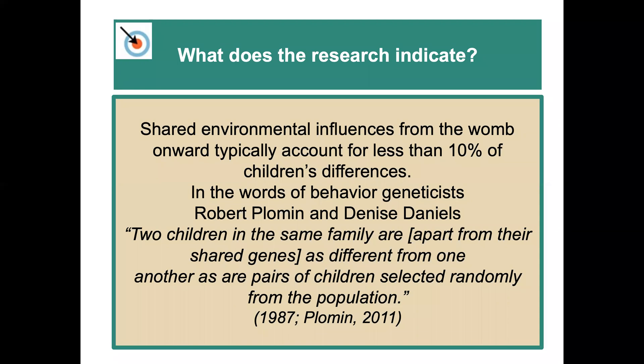Research indicates that shared environmental influences from the womb onward don't actually account for that much of the differences between children. Robert Plomin, a foremost behavioral geneticist, and Denise Daniels said two children in the same family are — apart from their shared genes — as different from one another as pairs of children selected randomly from the population. Underlying genetics and unshared environmental influence have the most effect on children's development.